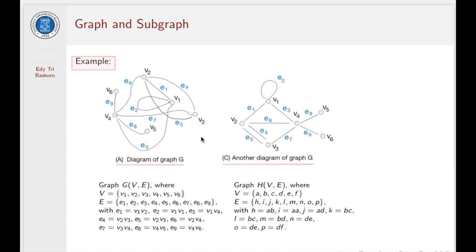As I said before, there is no unique way of drawing a graph. The relative positions of points representing vertices in the graph and lines representing edges have no significance. The matter is just the structure of the graph. For example, in C, we can have another diagram of graph G in A.